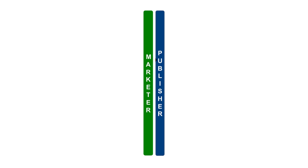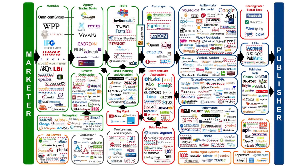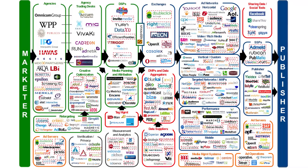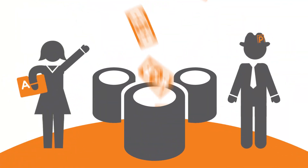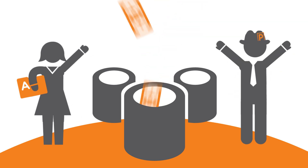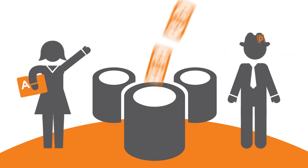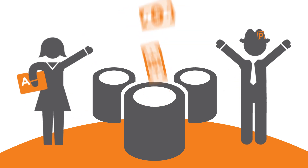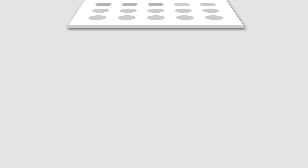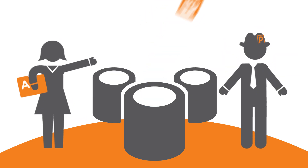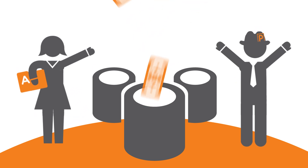Ad servers can't solve these problems by themselves. Thousands of companies sell solutions to these problems, and that's why the ad tech landscape looks like this. Infinitive's digital ad experts help both publishers and advertisers optimize their ad servers and master their ad tech environments, because that's the only way to make sure the right message reaches the right audience at the right time — which both ad buyers and sellers want, because that's how digital advertising will keep growing.